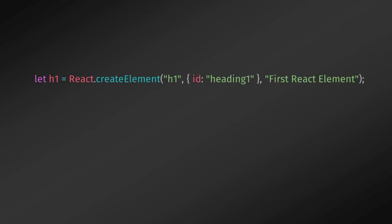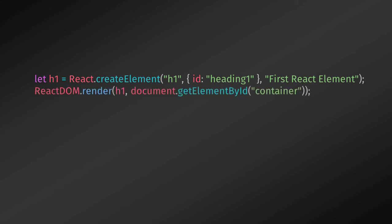Now let's put our previously created h1 heading tag into the render method and see how it looks. To create a React element we use the React object with the createElement method. So I'll write: let h1 = React.createElement. The first argument is the tag, so I'll say 'h1'. The second argument represents the element's properties, and after that I'll specify some text for the h1 heading tag.